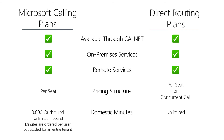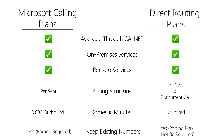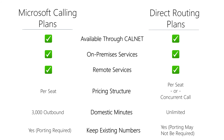Both Microsoft's calling plans and direct routing plans allow users the option to keep their existing phone numbers. To keep your existing numbers on a Microsoft calling plan, you'll need to port your numbers out of your existing telecommunications provider. On the other hand, if you purchase a direct routing plan from your existing telecommunications provider, porting may not be required.